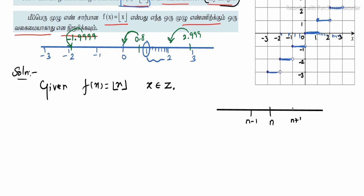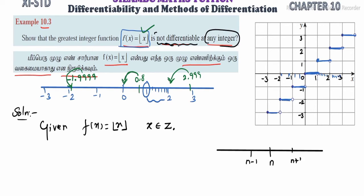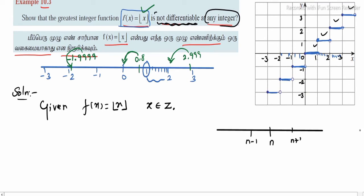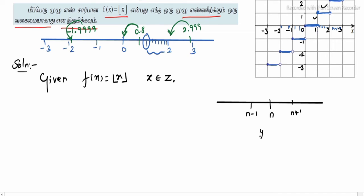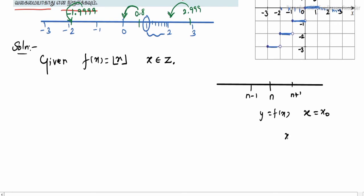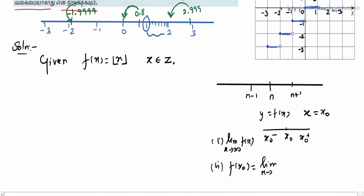On a number line, let n be any integer with n minus 1 to the left and n plus 1 to the right. We want to show it is not differentiable at n. Since the graph is not continuous at integers, we explain that it is not continuous. For a function y = f(x) to be continuous at x₀, the limit as x tends to x₀ of f(x) must exist and equal f(x₀).